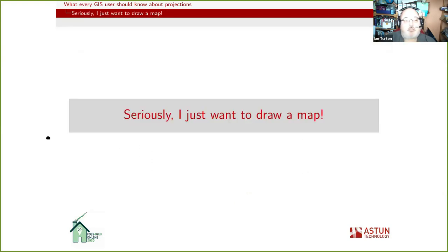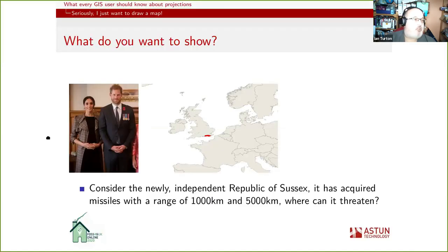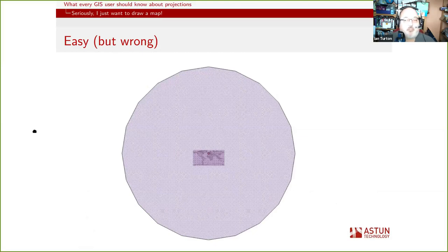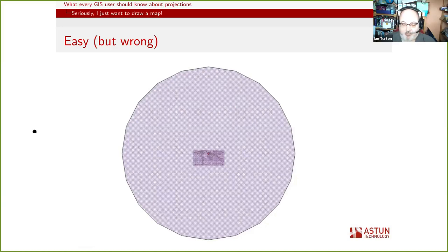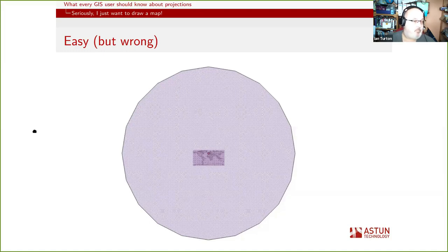You're going, well, I just want to draw a map, I don't need this. So what do you want to show? Consider the newly independent Republic of Sussex — we've acquired some missiles and we want to know where we can threaten with them. The question that comes up most often on Stack Exchange: I'm trying to do a buffer — and I've done all my examples in QGIS, but equally people try this in R, GeoPandas, PostGIS, the answer is the same. I've got a point and I've done a thousand kilometer buffer, and it's returned all of the data in my dataset. Something must be wrong. Well, the answer is you've used a thousand degree buffer and your buffer is actually bigger than the whole world.